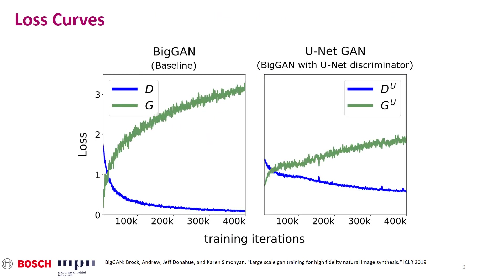The fact that the U-Net discriminator is harder to convince that an image is either completely real or fake is also reflected in the training loss curves. On the left, you see the generator and discriminator loss of our baseline. And on the right, you see the losses after we modified the discriminator into a U-Net shape. A problem that we see in GANs is that, if the discriminator loss drops too low, it does not produce useful gradients for the generator anymore.